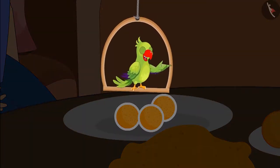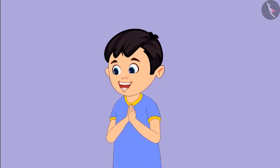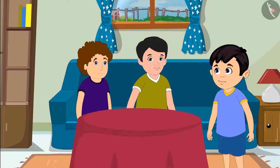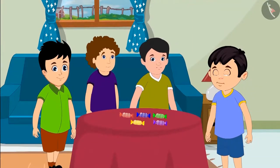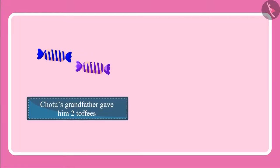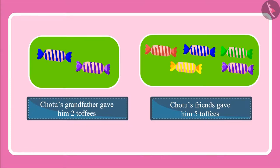Very good children, you counted the laddus correctly. It is festival season. Many guests are expected to come to Chotu's house. His grandmother and grandfather reached before everyone else. Hello grandmother, hello grandfather. Chotu's grandfather gave him two toffees. After some time, some of Chotu's friends also arrived. Chotu's friends also brought some toffees for Chotu. They gave Chotu five toffees. So can you tell me, how many toffees did Chotu get in total? Chotu's grandfather gave him two toffees and his friends gave him five toffees — two toffees and then five more toffees.